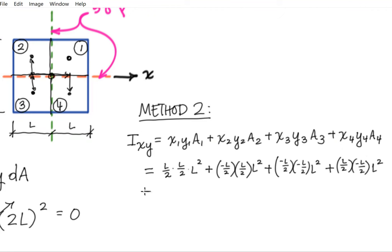And once we sum all this up, so I've got L, not cubed, but L to the fourth over 4. Here I have minus L to the fourth over 4 plus L to the fourth over 4 minus L to the fourth over 4. And we see that this product of inertia is also equal to 0.